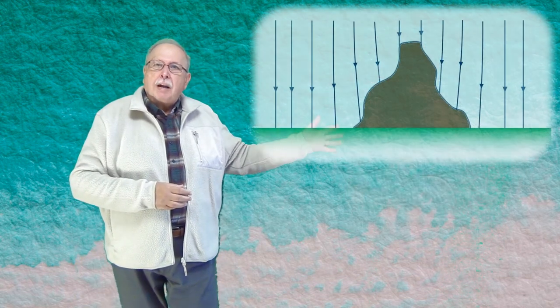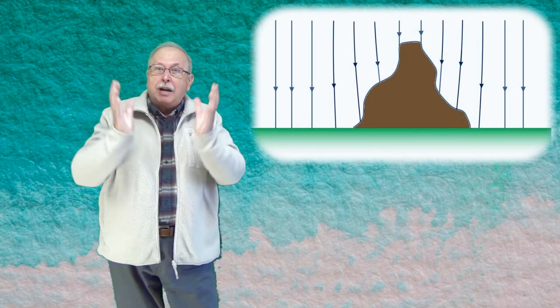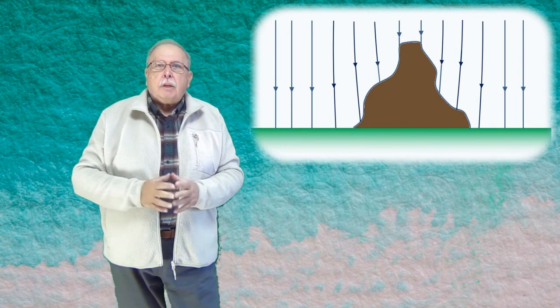Dar, după cum am arătat în clipul precedent, un munte curbează liniile câmpului gravitațional al Pământului, le curbează spre el.